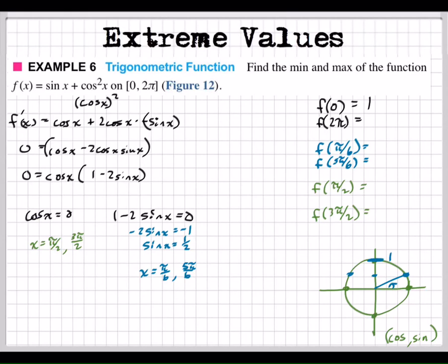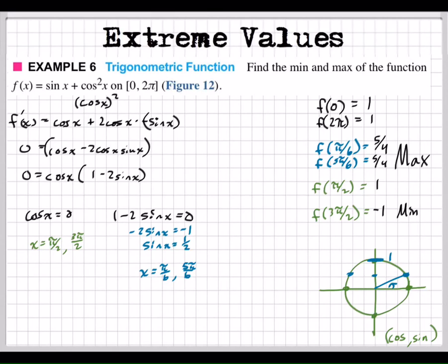Students report: f of 0 is 1, f of 2π is 1 also, f of π/6 and f of 5π/6 are both 5/4, f of π/2 is 1, and f of 3π/2 is negative 1. So the minimum value is negative 1, and the maximum value is 5/4 — slightly more than 1.